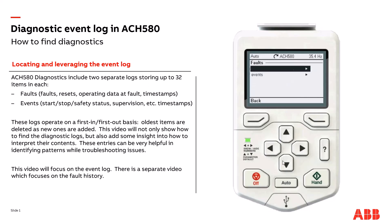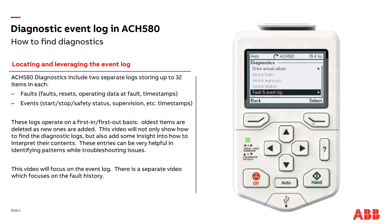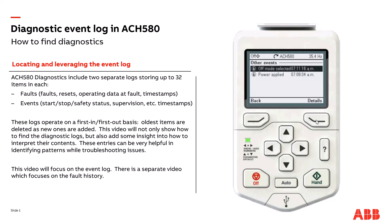Currently we have no faults, and we have just our power-up event which I did after I cleared the faults. We'll stay right here at Other Events. The first thing I'm going to do is push the Off button, so now we've transitioned to the Off state. Let's go into the event log and see what that looks like — we can see Off mode has been selected and it gives us the timestamp.